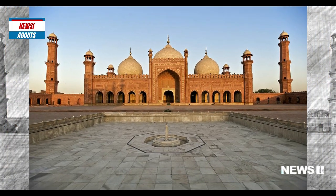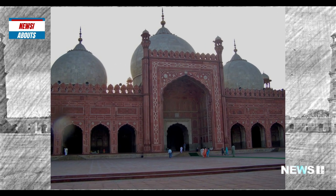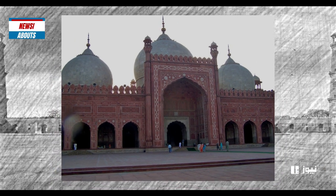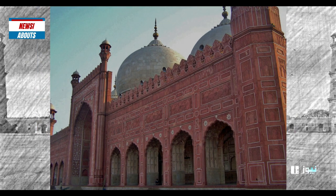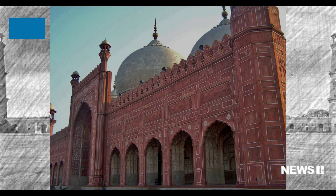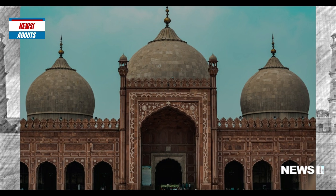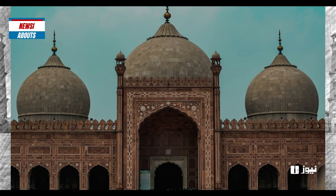During the British colonial era, the mosque underwent several renovations and modifications. In 1852, the British added a marble screen around the mosque's central courtyard, which was later removed during the mosque's restoration in the 1960s.